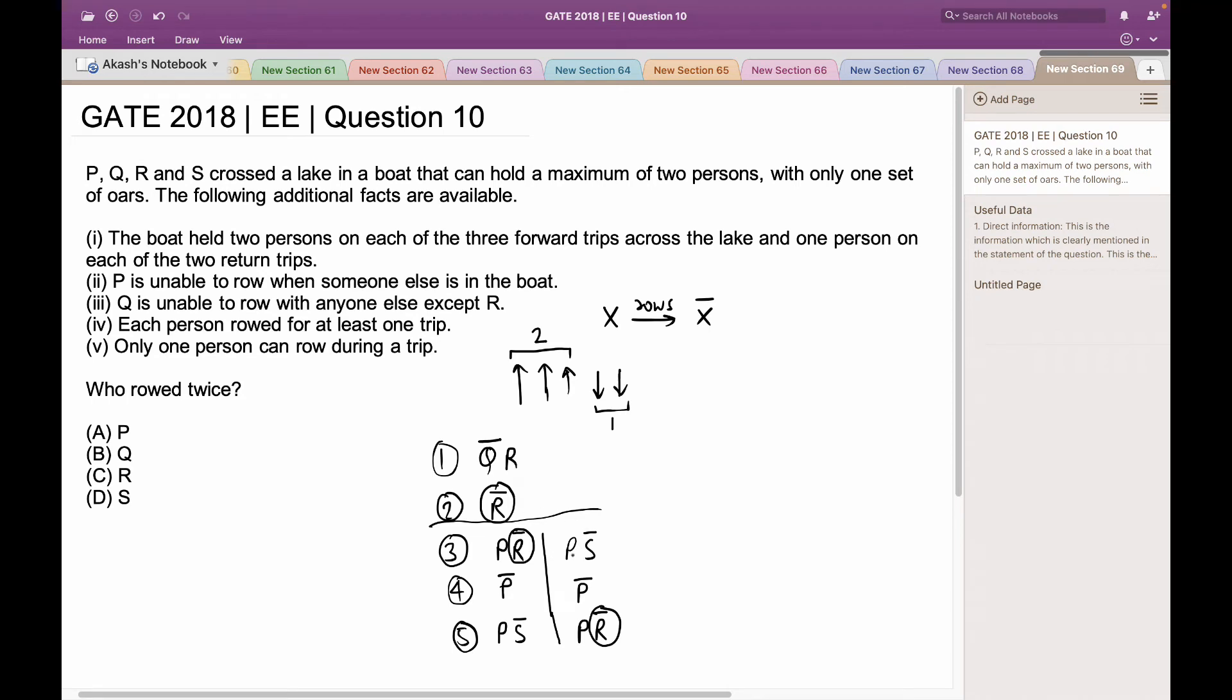And these two conditions satisfy all of those five conditions. Here, every person has rowed at least once: Q, R, S and P, where R has rowed twice.